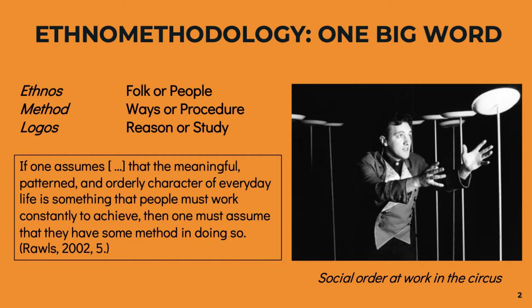Here's a quote from Ann W. Rawls, one of Garfinkel's students: 'The word ethnomethodology represents a very simple idea. If one assumes that the meaningful, patterned, and orderly character of everyday life is something that people must work constantly to achieve, then one must assume that they have some method for doing so.' In order to keep the plate spinning, to keep the circus going, we have to employ a method — a delicate touch. The plate spinner knows what they're doing but cannot articulate it. The goal of ethnomethodology, the logos, is to study it. To repeat: ethnomethodology is the study of folk methods for accomplishing social order.